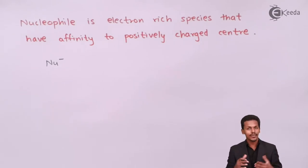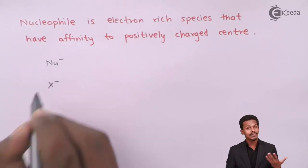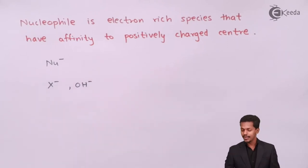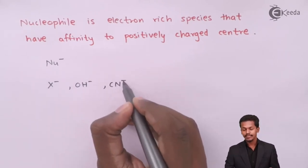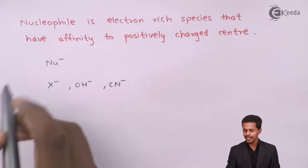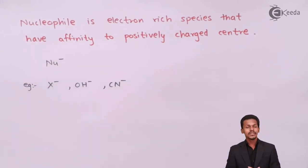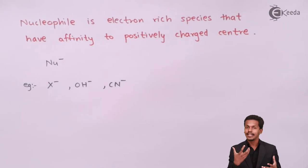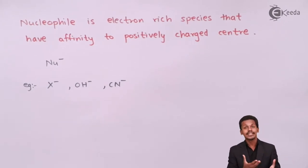There are various kinds of nucleophiles. For example: halide ions (X⁻), hydroxyl group (OH⁻), CN⁻, etc. These are a few examples of nucleophiles. Since we are talking about nucleophilic substitution, these groups are able to replace other leaving groups, which is why the reaction is called nucleophilic substitution.